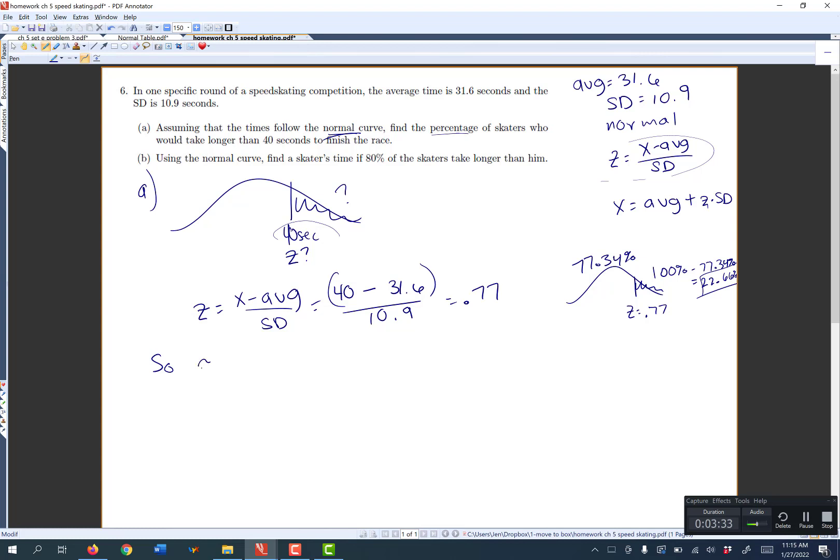So about 22.66% of skaters take longer than 40 seconds, which in a race is actually quite fast. So that's part A.